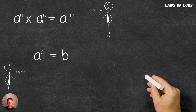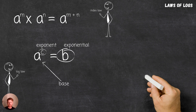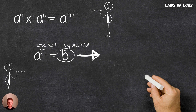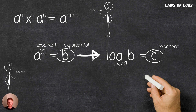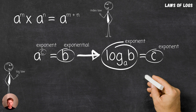To illustrate this, let's look at the relationship between index and log notation. In index notation we have a to the power of c equals b, where c is the exponent, a is the base, and b is the resulting value of the exponential. This equation in index notation can be rearranged and written in log notation as log base a of b equals c, where log base a of b is equal to the exponent c, and we're taking the log of the exponential b. An equation in log notation gives us a value of an exponent, whereas index notation gives us a value of an exponential — an important difference to remember.